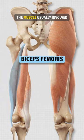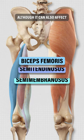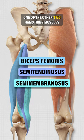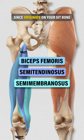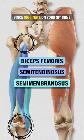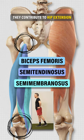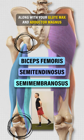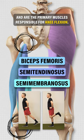The muscle usually involved is the long head of the biceps femoris, although it can also affect one of the other two hamstring muscles — the semitendinosus or semimembranosus. Since these originate on your sit bone and insert onto your lower leg, they contribute to hip extension, along with your glute max and adductor magnus, and are the primary muscles responsible for knee flexion.